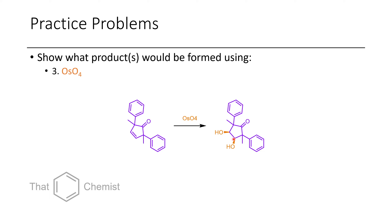This and its enantiomer would both be formed. Because I haven't illustrated stereochemistry on the two alpha positions of the carbonyl, it's not clear whether this is a single compound or a mixture of diastereomers, but the point is that both hydroxy groups would be installed from the same side.